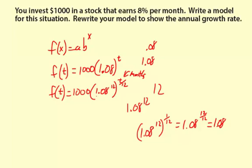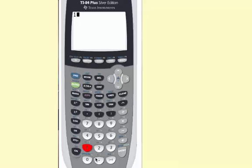Now to finish this off, I'm going to figure out what 1.08 to the 12th power is, and that will show the annual growth rate. So 1.08 to the 12th equals 2.518. I'll just round it to 2.52.